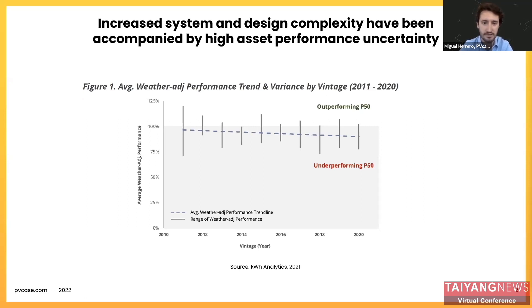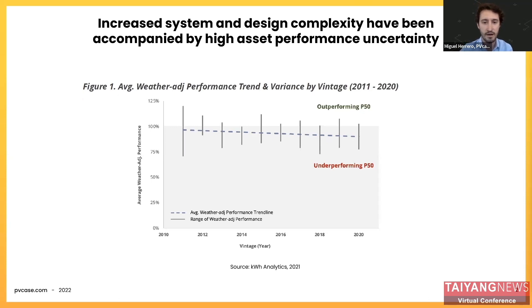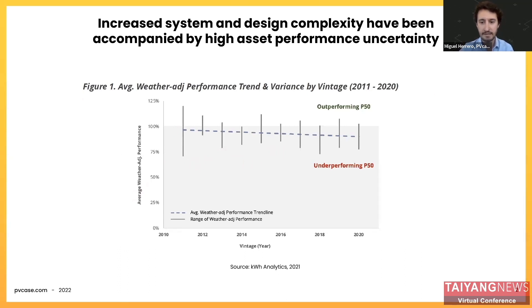This growth has been accompanied by a growth in asset performance uncertainty. As projects have become more technically complex, the models we have used to simulate them have not necessarily followed. What you can see here is a study performed by KWH Analytics, a US-based solar insurance company that partnered with O&M providers covering about 30 gigawatts of capacity in the USA.